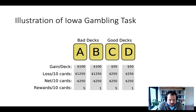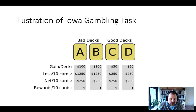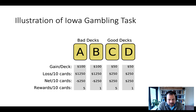Every time you draw a card, you either get a win or a loss. In the good decks, you have relatively small wins — $50 in this version — but losses over 10 cards average $250. The bad decks have much larger losses of $1,250, giving a net gain of $250 in good decks and net loss of $250 in bad decks.